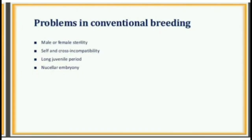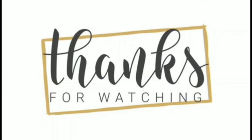Problems in conventional breeding: number one, male or female sterility; number two, self and cross incompatibility; number three, long juvenile period; number four, nuclear embryony. That brings us to the end. I would like to thank you for your time, interest, and attention.